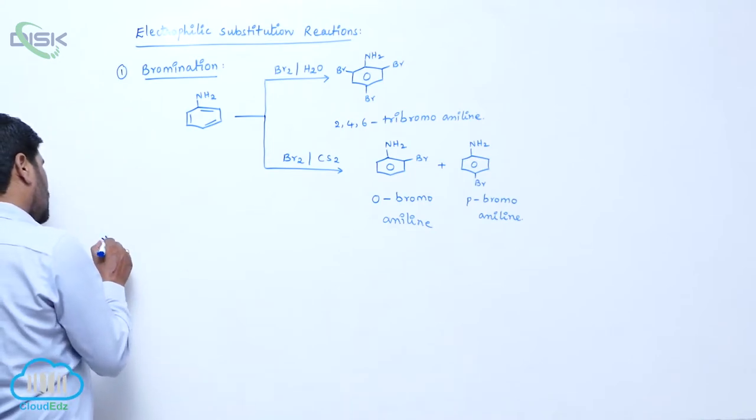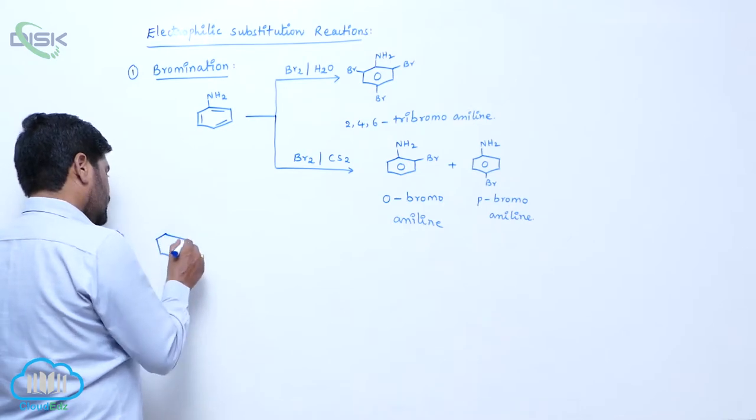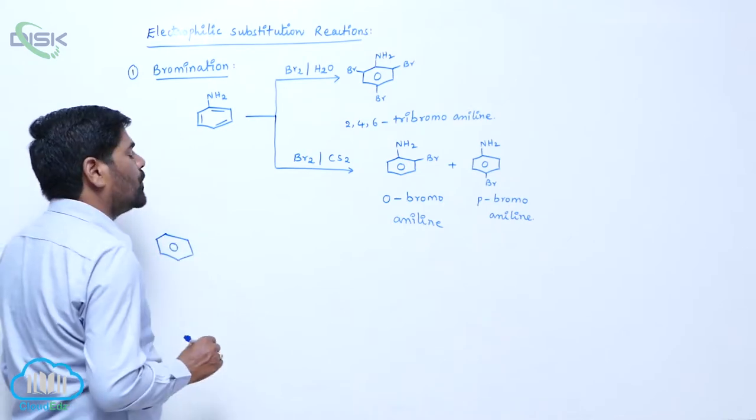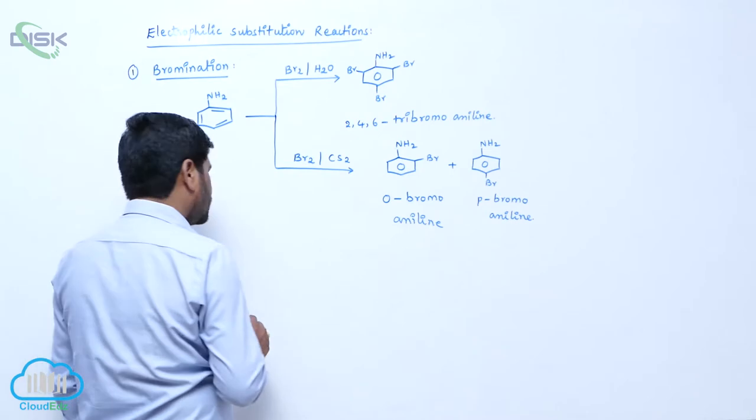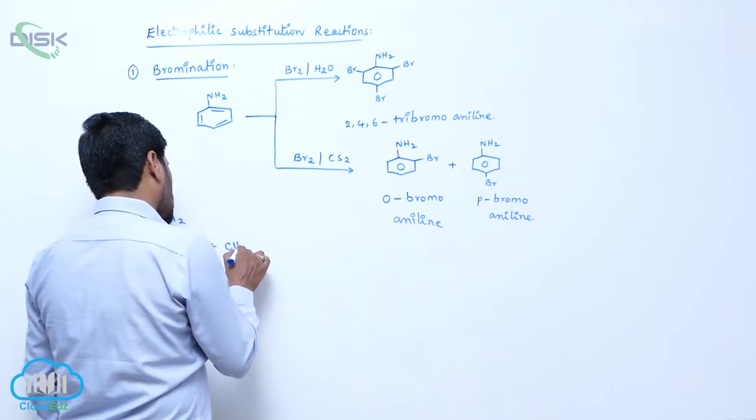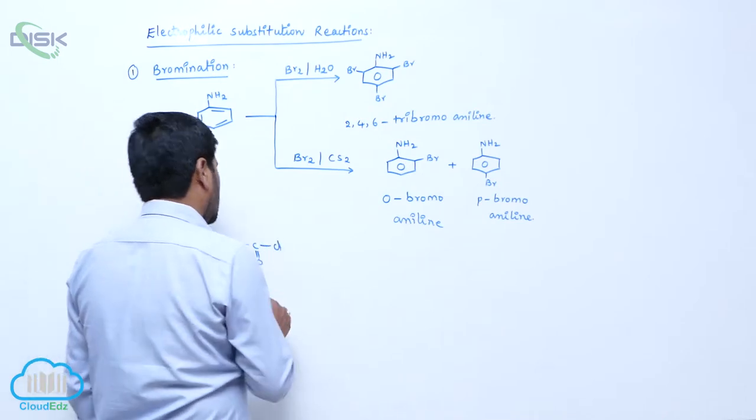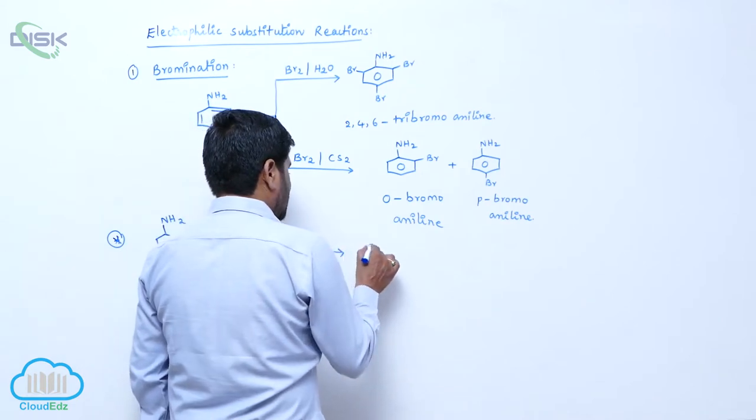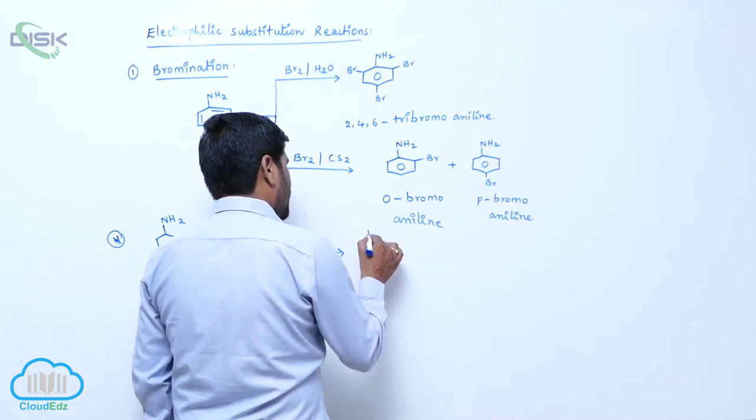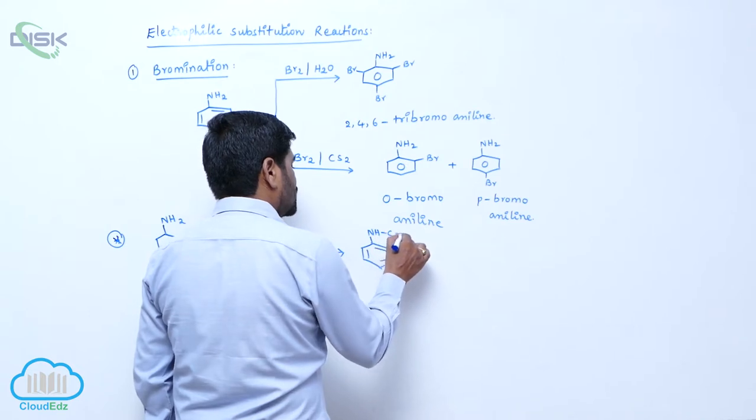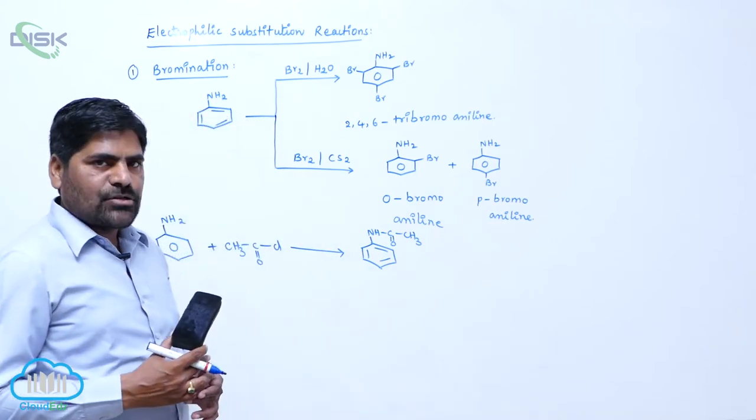To get more yield of ortho and para product, first the amino group is protected. Now the reactivity of NH2 group decreases. Aniline reacts with acetyl chloride to form acetanilide on benzene ring. NH-CO-CH3 group can act as a moderately ring-activating group.